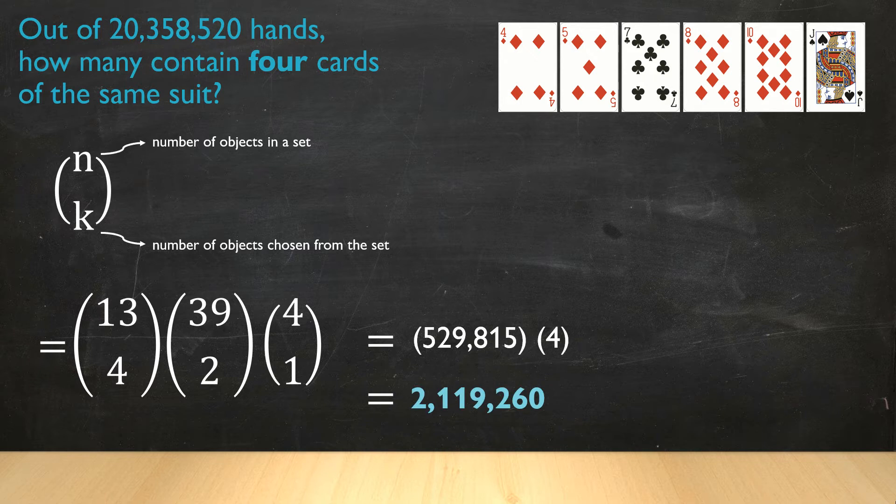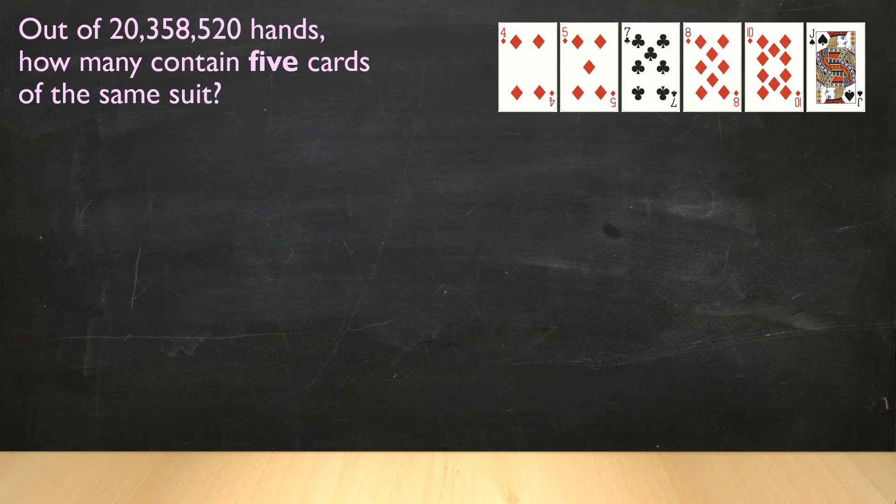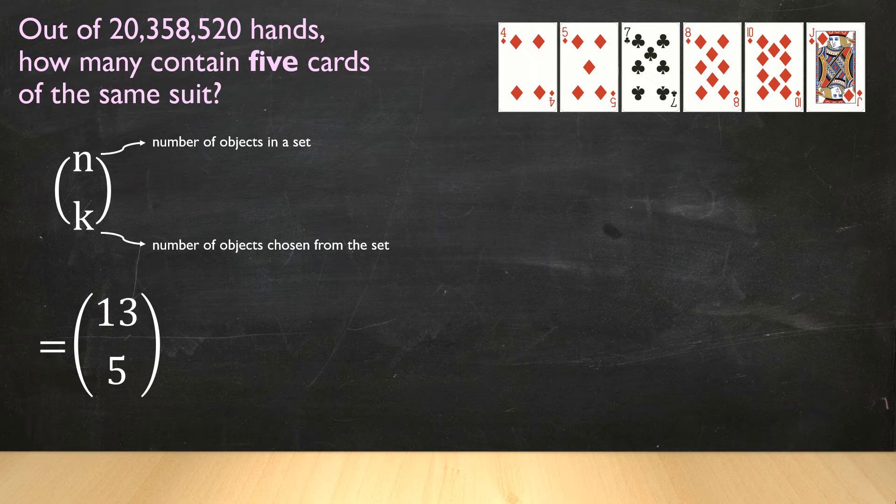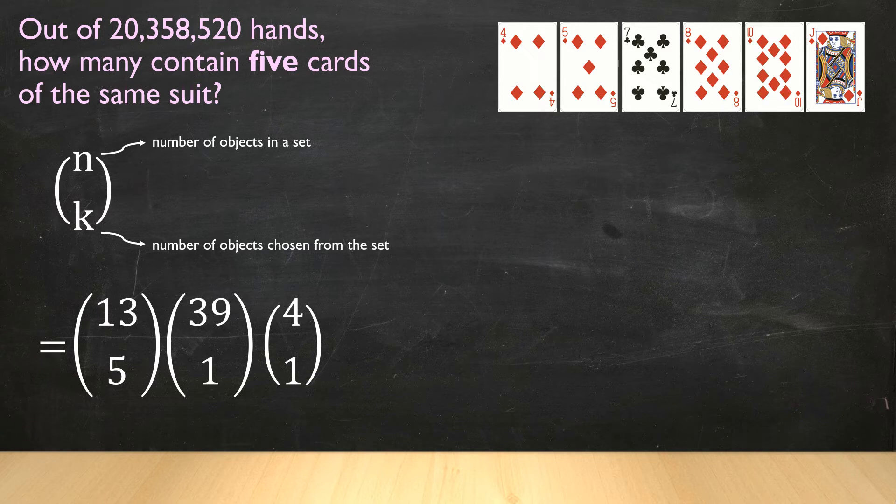Now we can calculate the same for five cards of the same suit. So same idea. Here's our example. Our Jack of Spades becomes a Jack of Diamonds. Our N value, the number of objects in our set, is still 13, 13 cards in each suit. Our K value, the number of objects we want from that set, is now five. So 13 choose five. We need one more card to make up our six card hand. And that card can come from any of the remaining 39 cards in the deck. So 39 choose one. And last, there are four suits, and we're choosing one of them. That gives us 200,772 six card hands that contain five cards of the same suit.